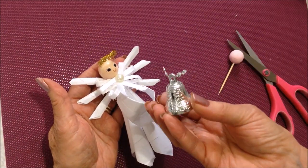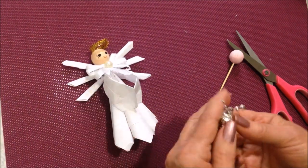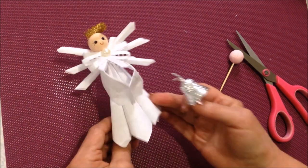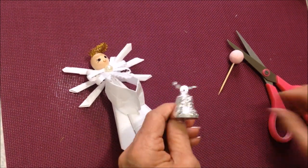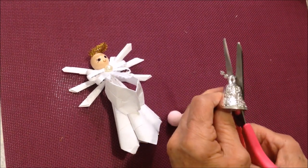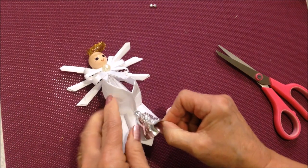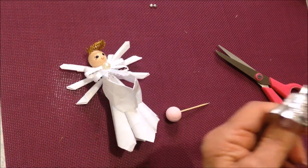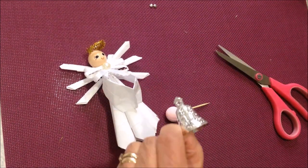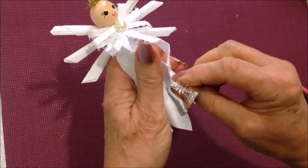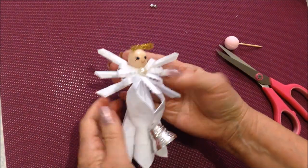Now I have a little bell here that I cut off from a piece of garland. So you could just leave your angel like that or you could add a little instrument. So I'll just trim these off and I'm going to glue that there. So she can be a bell ringer angel.